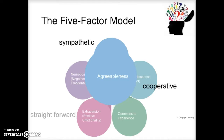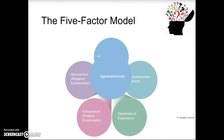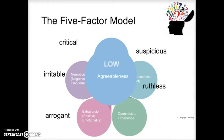The next trait is agreeableness. People who are highly agreeable are very cooperative, sympathetic, and trusting — though super high agreeableness can mean trusting to a fault and being a little gullible. They tend to be modest and straightforward. Someone who is low on agreeableness is going to be the opposite: critical, irritable, arrogant, suspicious, sometimes even to the point of being ruthless about other people.